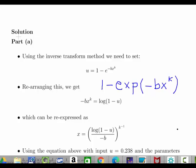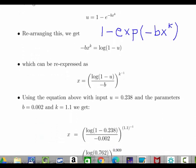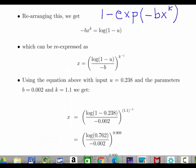So if we rearrange that, using laws of logarithms and exponentials, what we get is minus b x to the power of k is equal to log of 1 minus u, which can be expressed as follows. x is equal to log of 1 minus u divided by minus b to the power of k minus 1.